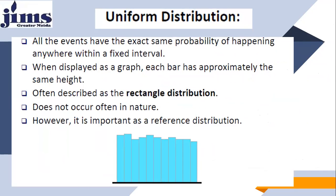Now coming to uniform distribution. Uniform distribution, as the name suggests, is a distribution that is uniform for all the random variables, meaning all the events have the exact same probability of occurring anywhere within a fixed interval. There is a fixed sample space where all the random variables have equal probability. When displayed as a graph, each bar has approximately the same height. This uniform distribution is sometimes also called a rectangular distribution because the shape that comes out looks like a rectangle.